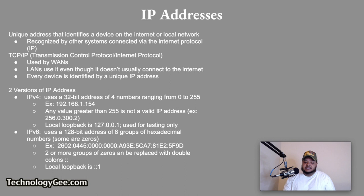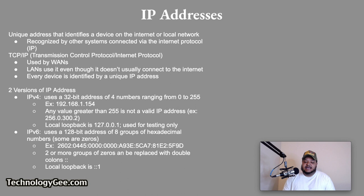There are two versions of IP addresses. The first is IP version 4, which uses a 32-bit address composed of four numbers ranging from 0 to 255. An example of an IPv4 address would be 192.168.1.154. If any part of the IP address has a value greater than 255, it is not a valid IP address — for example, 256.0.300.12 is invalid. A local loopback IP address, 127.0.0.1, is assigned to each computer and is only used for testing.